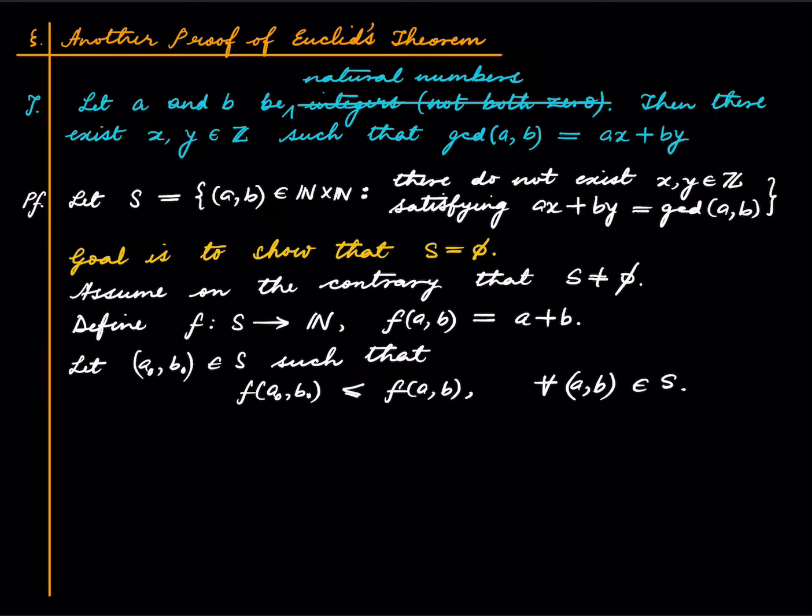So there are a few cases. Case 1: A0 is equal to B0. Then GCD of A0 comma B0 equals A0, because the two integers are equal.